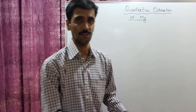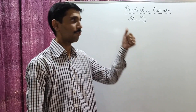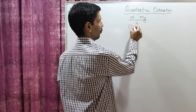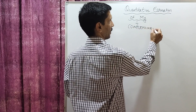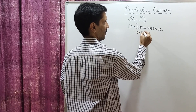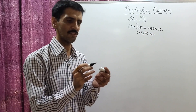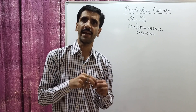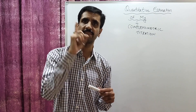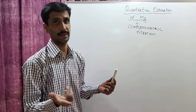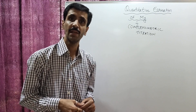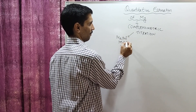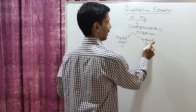The theory behind this experiment is that the method used for quantitative estimation of magnesium is complexometric titration. When we talk about complexometric titration, it involves a complex, and a complex essentially requires two species: one is a metal and the other is a ligand. The metal is going to be magnesium ions, and the ligand is going to be EDTA.